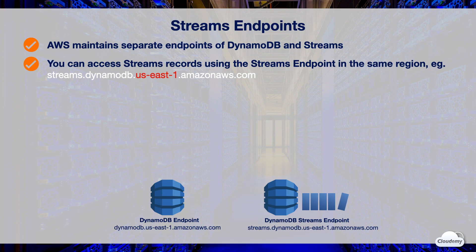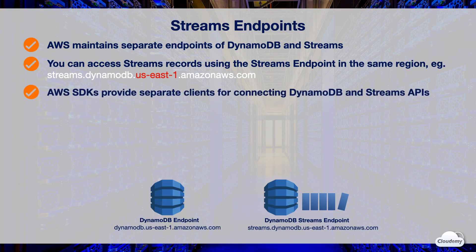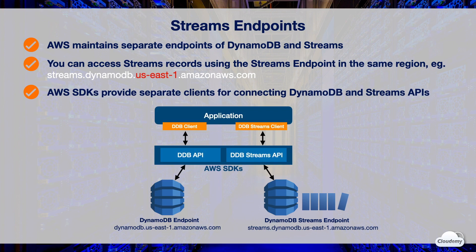You need to specify the regions when accessing these endpoints. The stream endpoint name starts with 'streams.dynamodb' plus the regional AWS host. For example, for the us-east-1 region, the DynamoDB endpoint is dynamodb.us-east-1.amazonaws.com and the stream endpoint is streams.dynamodb.us-east-1.amazonaws.com. AWS SDKs provide separate clients for DynamoDB and Streams APIs — with a DynamoDB client for tables and indexes, and a Streams client to process stream records.